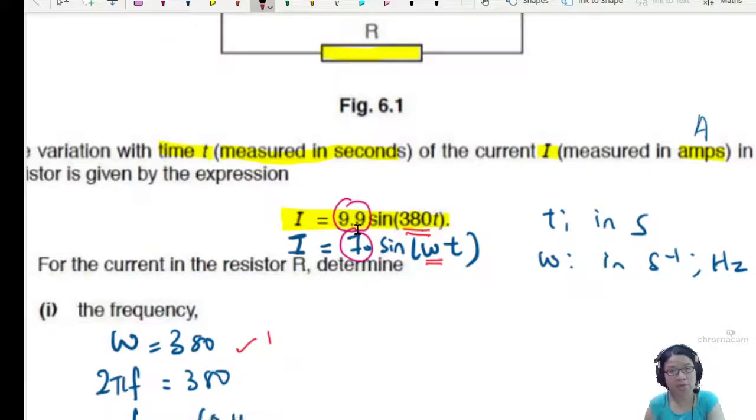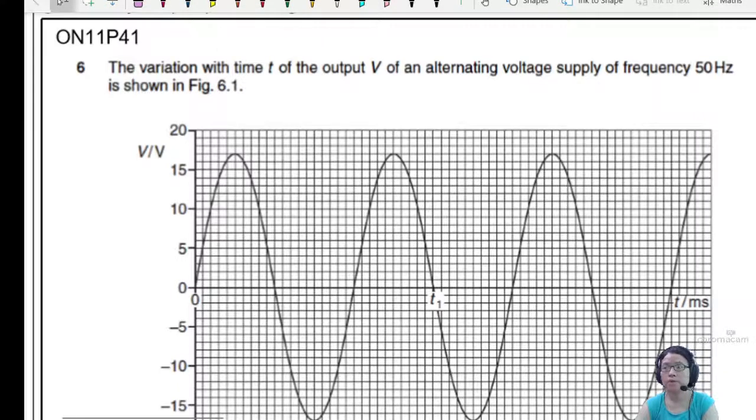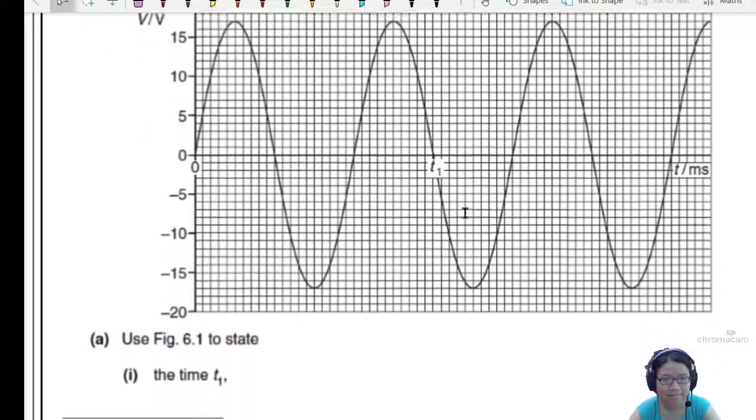So now let's look at a second example, where instead of giving you an equation, they gave you a graph. Okay. This is a second example from the same year, a different sitting. This is winter 11 paper 4.1. So as you can see behind me, there's a big graph. So this is the variation with time t of the output of an alternating voltage supply of frequency 50 hertz. So this is my F. Frequency 50 hertz is a very common frequency for most alternating currents.